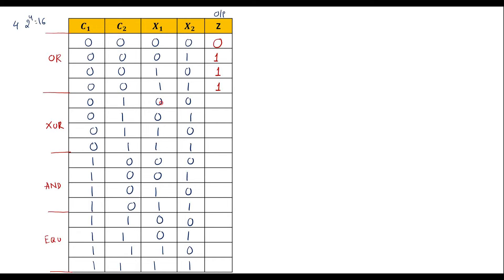For XOR: 0 XOR 0 = 0; 0 XOR 1 = 1 (only one input is 1); 1 XOR 0 = 1; 1 XOR 1 = 0. For AND operation, like multiplication: 0·0 = 0; 0·1 = 0; 1·0 = 0; 1·1 = 1. For the XNOR (equal) operation: when X1 equals X2 the output is 1. So 0,0 → 1; 0,1 → 0; 1,0 → 0; 1,1 → 1. Now we have all output values.